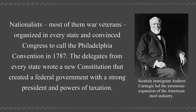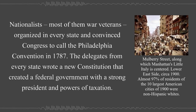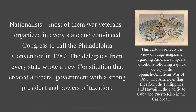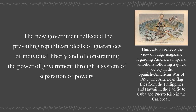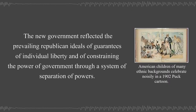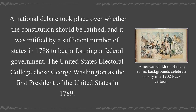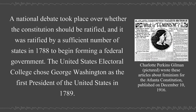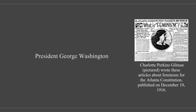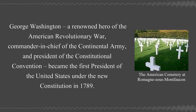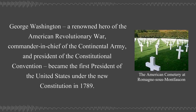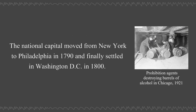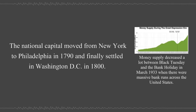Nationalists, most of them veterans, organized in every state and convinced Congress to call the Philadelphia Convention in 1787. The delegates from every state wrote a new constitution that created a federal government with a strong president and powers of taxation. The new government reflected the prevailing republican ideals of guarantees of individual liberty and constraining the power of government through a system of separation of powers. The constitution was ratified by a sufficient number of states in 1788 to begin forming a federal government. The United States Electoral College chose George Washington as the first president of the United States in 1789. The national capital moved from New York to Philadelphia in 1790 and finally settled in Washington D.C. in 1800.